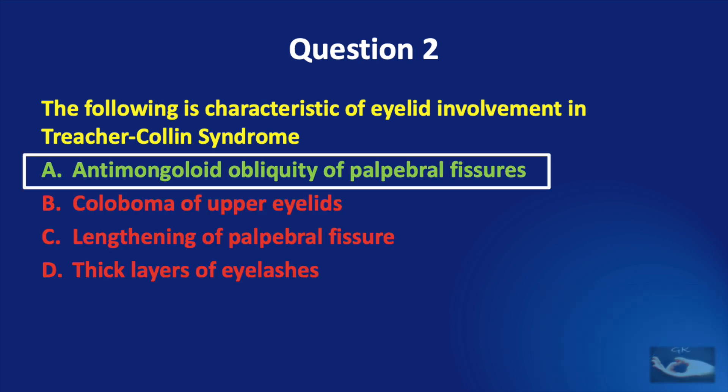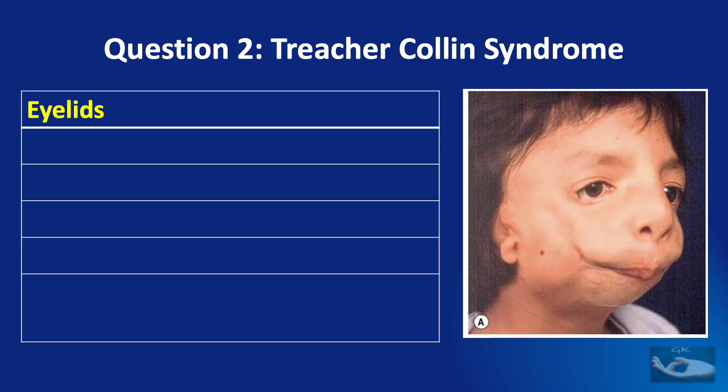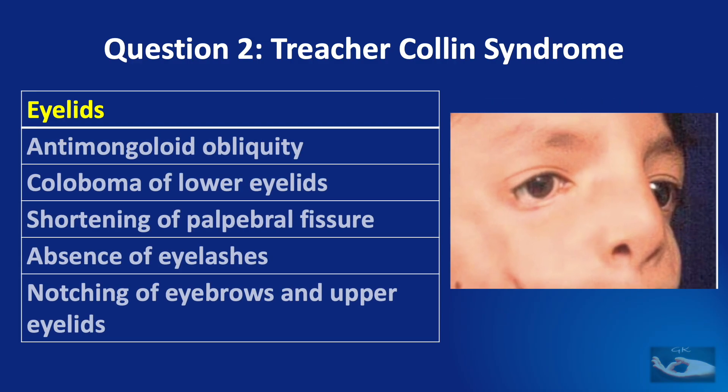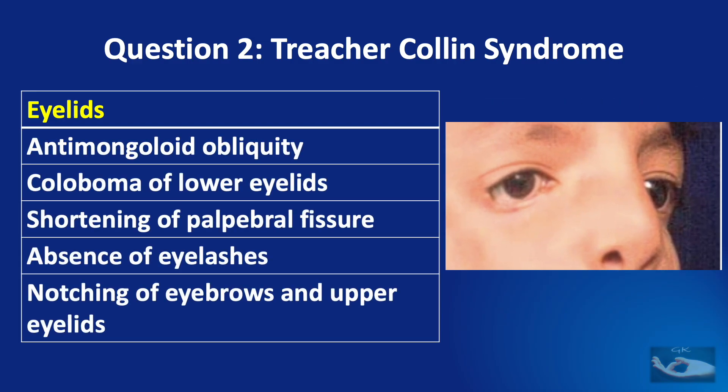The correct answer is Anti-Mongoloid obliquity of palpebral fissures. The characteristics of the eyelids in Treacher-Collins Syndrome are: Anti-Mongoloid obliquity of the eyelids, coloboma of the lower eyelids, shortening of the palpebral fissure, absence of eyelashes, and notching of eyebrows and upper eyelids.